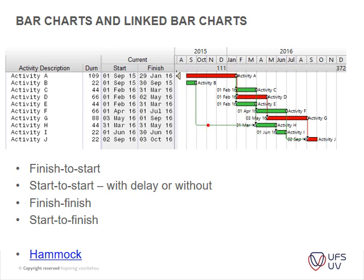In a linked bar chart, one item is linked to another, but you may have different relationships between your links. You may have finish-to-start: once one activity is finished, the linked one starts. Then you have start-to-finish and start-to-start: when this one starts, the other one will start as well. You may also have a delay built in - for example, two days after one activity starts, another can start. Then you have finish-to-finish: when one activity finishes, the other has to be finished as well.